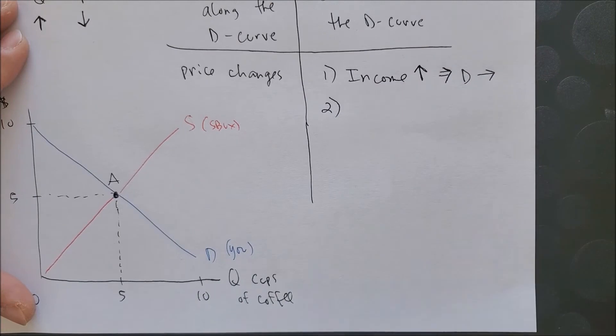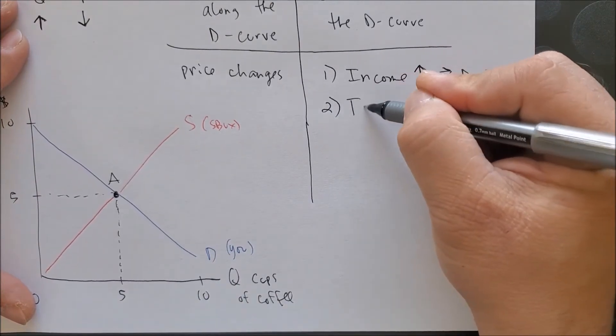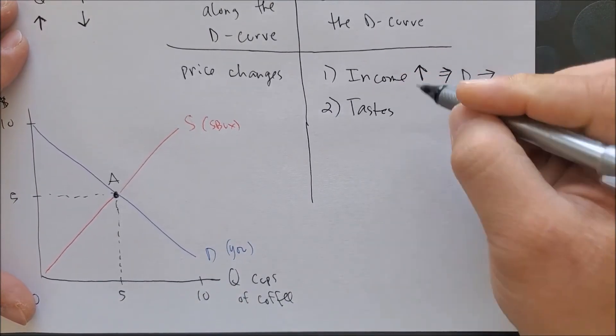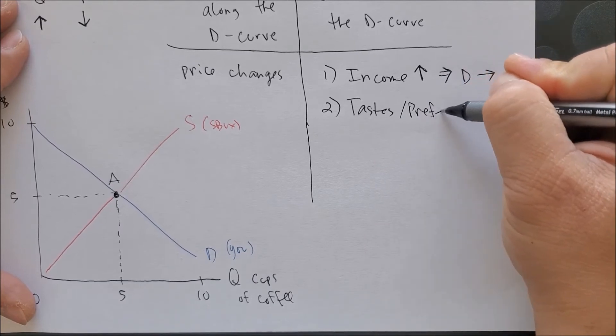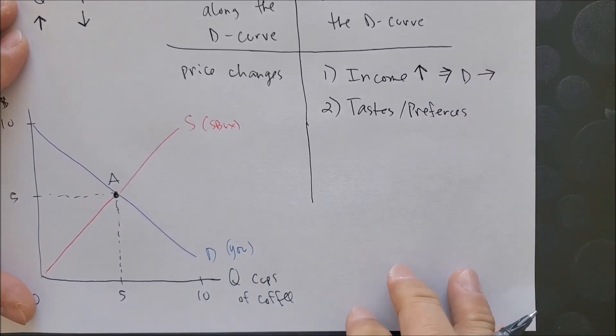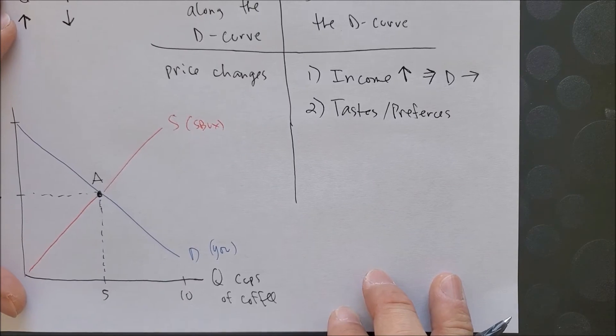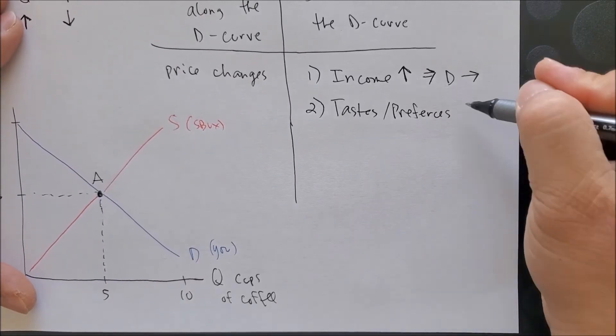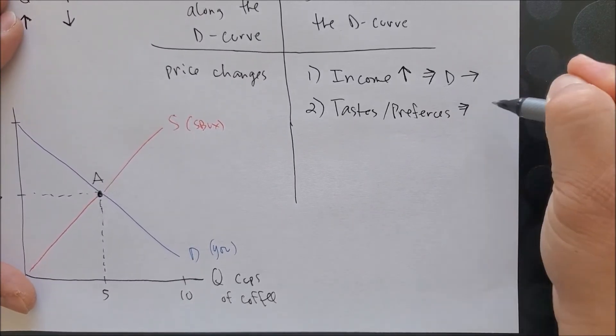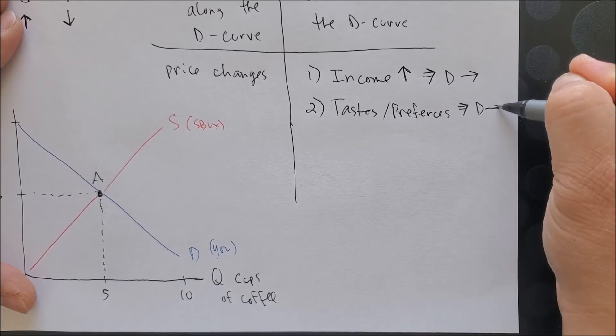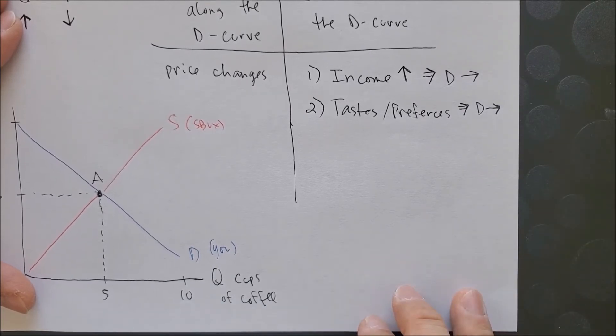Number two will focus on what you like, tastes and preferences. So if you really like something, you're going to consume that good. And when you like something, the demand curve will shift to the right.